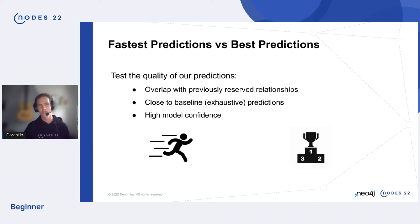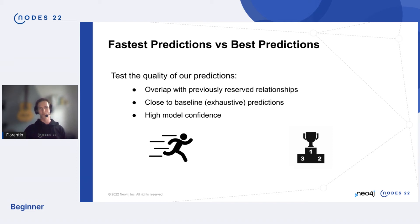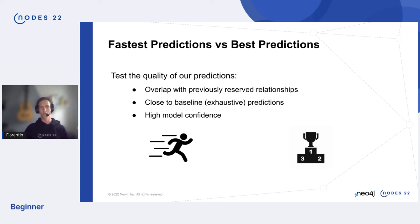As always there is a trade-off. The fastest option is to use only the initial random candidates with zero iterations, but these may not be the best predictions. The best predictions come from the exhaustive approach that tries every combination — you can't do better than that, assuming the model is good enough.